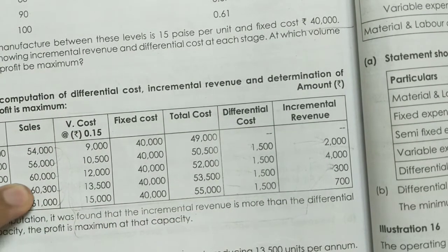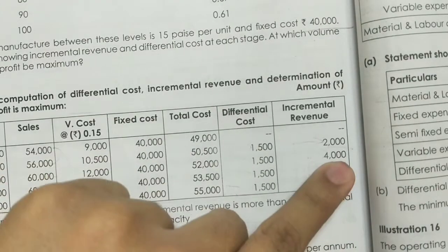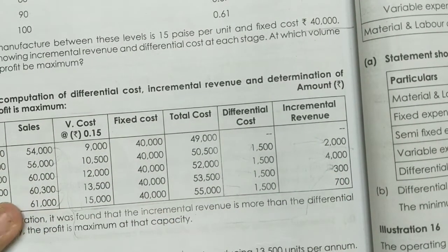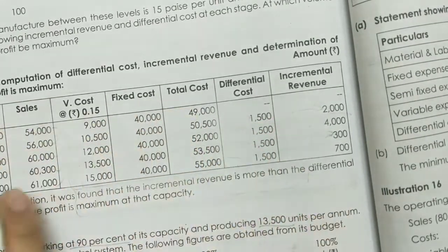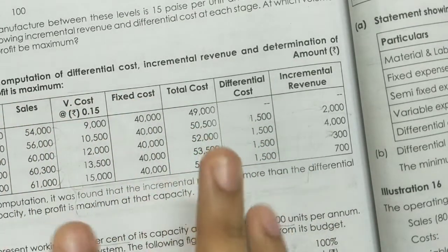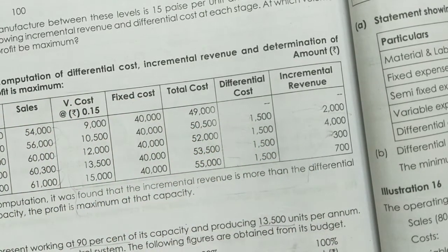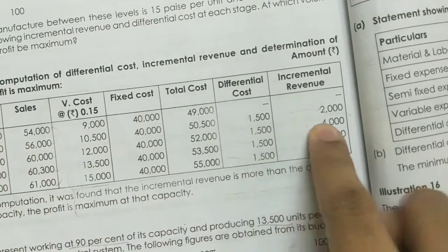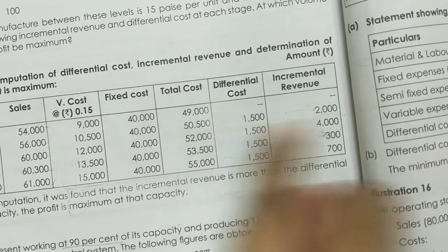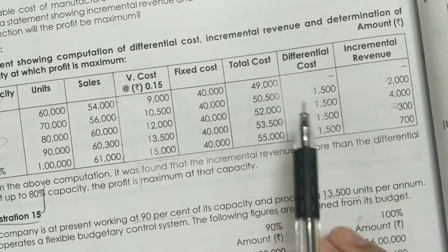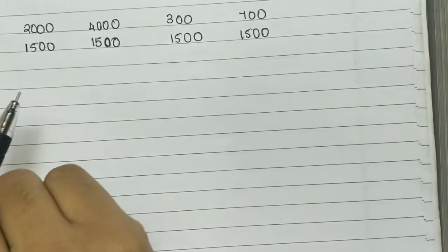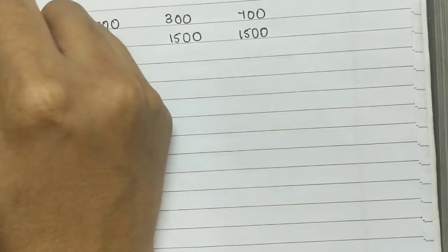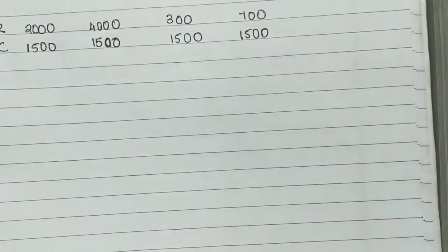We have 60,000 and the difference gives 300. Here we have the maximum profit at 80% because that is where the most incremental revenue is seen. Now we are putting the differential cost alongside the incremental revenue to compare them.